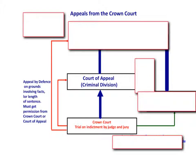The first route to consider is the main appeal route, which is from the Crown Court to the Court of Appeal. This appeal is by the defence only. The grounds for that appeal are that the defendant thinks that the court got the facts wrong, the law wrong, or the length of the sentence wrong.